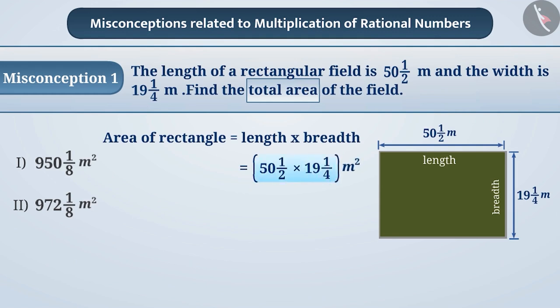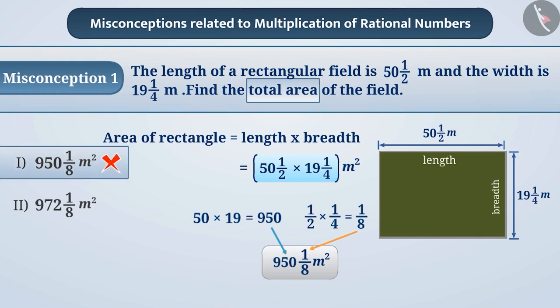While multiplying 50½ and 19¼, many times children multiply the whole parts separately and the fractional parts separately. Here, they multiply 50 and 19 and multiply ½ and ¼, and together they get the result 950⅛ meter square, which is option 1. This is incorrect.